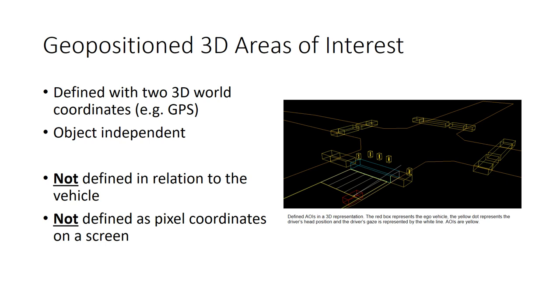Now that I have explained our motivation, let's define what exactly geo-positioned 3D areas of interest are. 3D AOIs, in their essence, are boxes defined by two opposing points. In this, they are similar to bounding boxes.